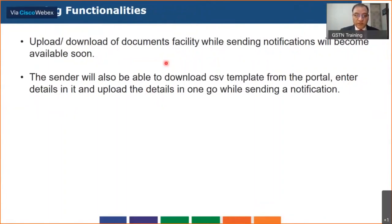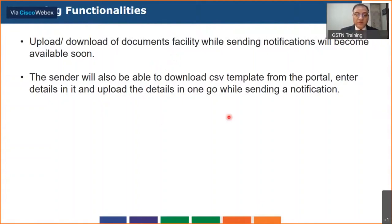Two functionalities going to be implemented shortly: first, in addition to sharing details while sending a notification, you will also have a facility to upload documents — for example, if you want to report a missing invoice to the supplier, you can scan the invoice itself, attach it to the notification, and upload it on the portal, which will flow to the counterparty who can then download it. Second, if you have a larger number of records, you can download a CSV template from the portal, enter all the details, and send it along with a notification, with support for copy-paste in the same format.